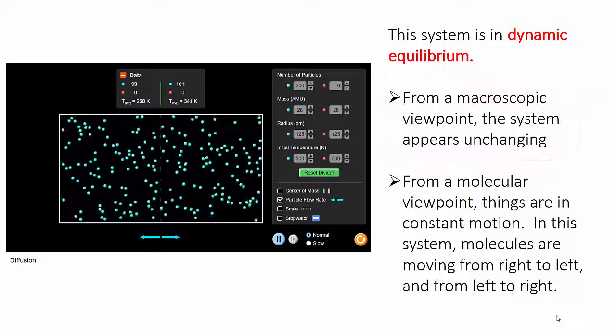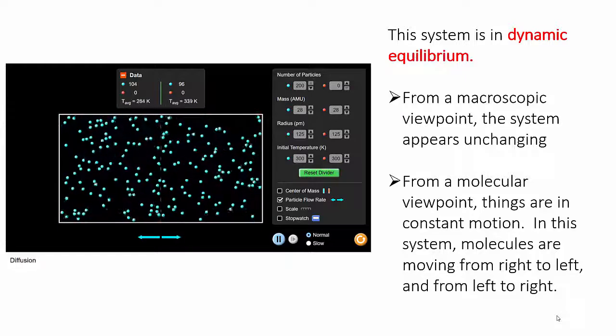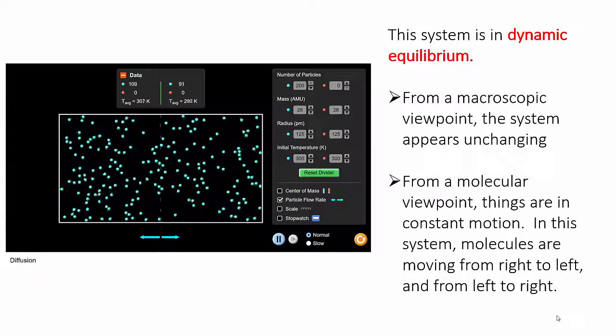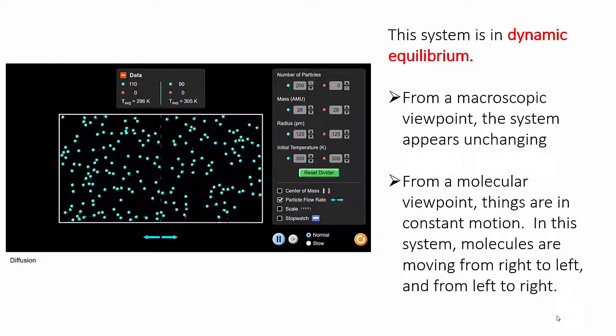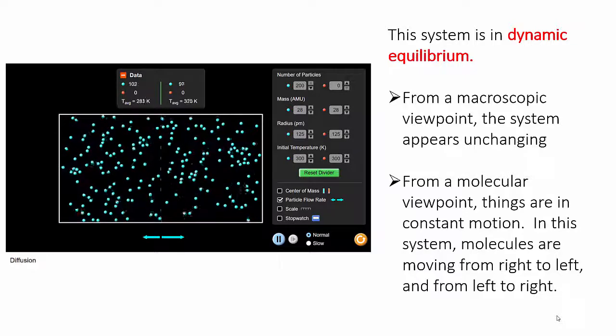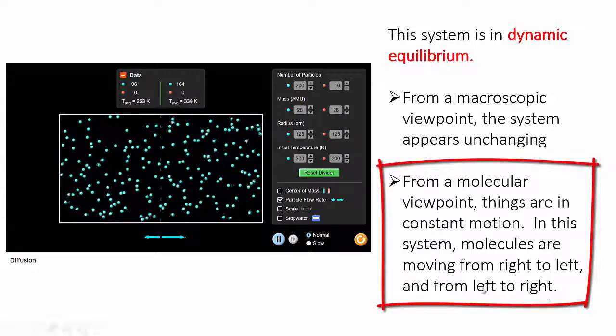Remember the larger the system, that is the more molecules that are involved, the truer this becomes. Because this simulation is looking at a very small number of particles, the fluctuations are more obvious. So, on average things aren't changing. But the second key point is that if we look at the individual particles within the system, they're in constant motion, moving from one side to the other.